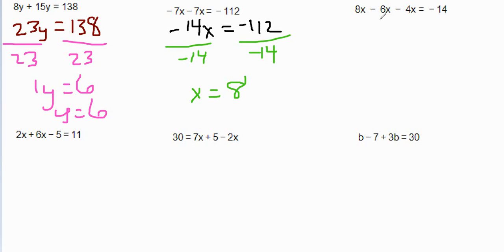The next one we have 8x minus 6x minus 4x equals a negative 14. So 8 minus 6 is 2x. And you could do all this in one step. So we have 2x minus 4x equals negative 14. So 2x minus a negative 4x, that's going to equal a negative 2x. So we have negative 2x equals negative 14.